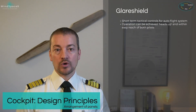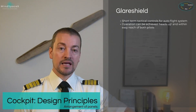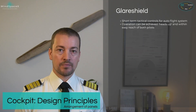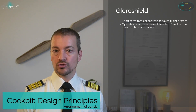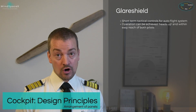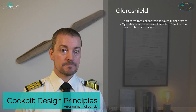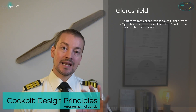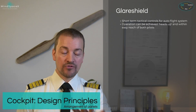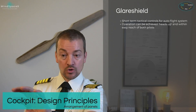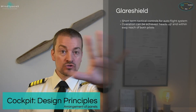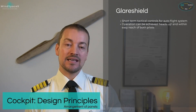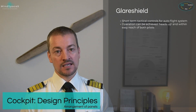The glare shield, which is the part in front of the pilot, also known as the eyebrow of the cockpit, is a short-term tactical control used for the autoflight system by the pilot. Operation is easy because it allows for a heads-up for the pilot at all times — it's not a head-down scenario when operating controls, and that is the efficiency and safety part of it.